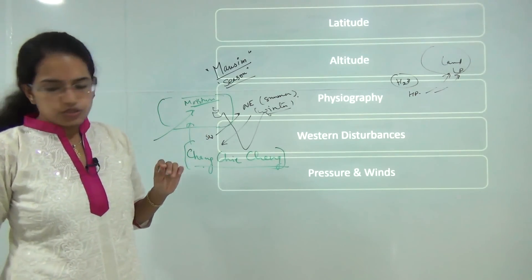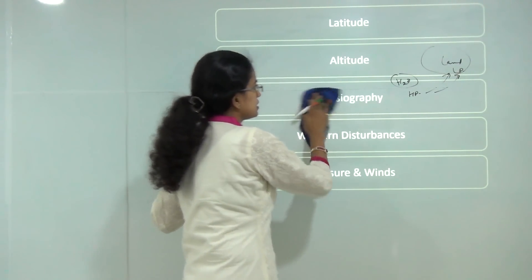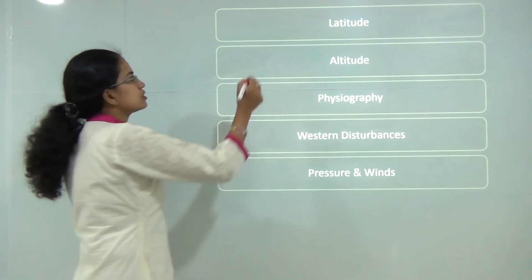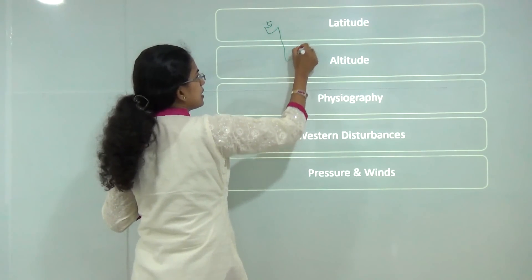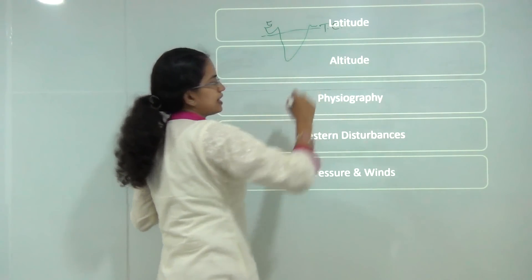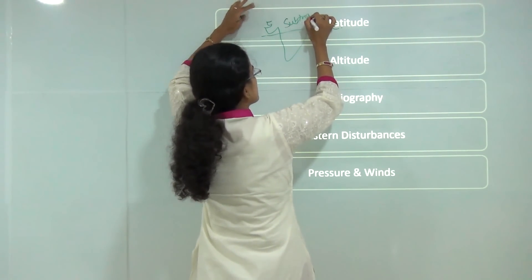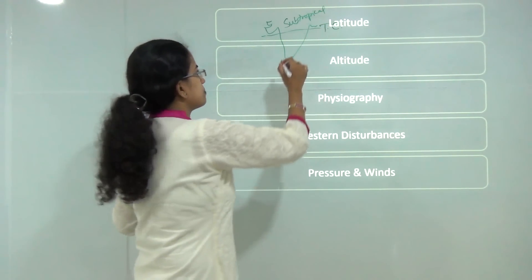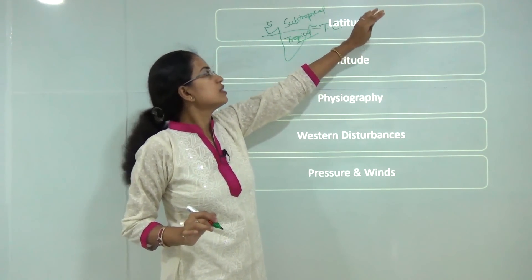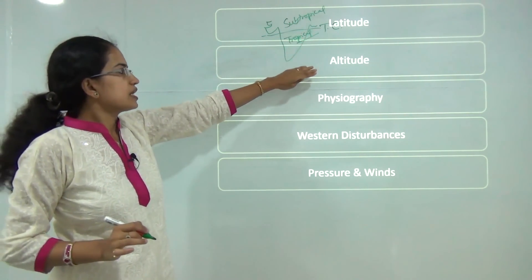There are five primary factors that affect monsoon. The first is latitude. The region north of the Tropic of Cancer is the subtropical region, and the region south of the Tropic of Cancer is the tropical region. Both the subtropical and tropical regions are affected differently by the monsoon.